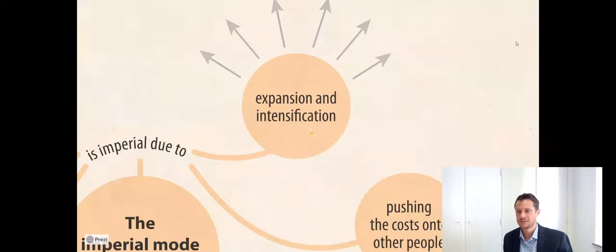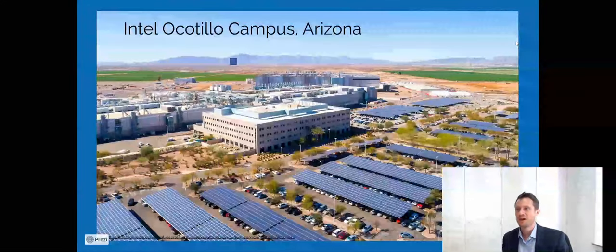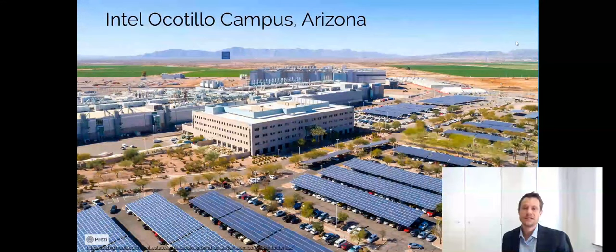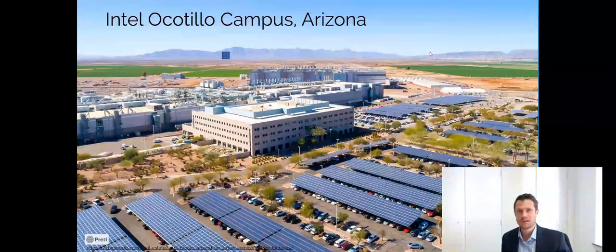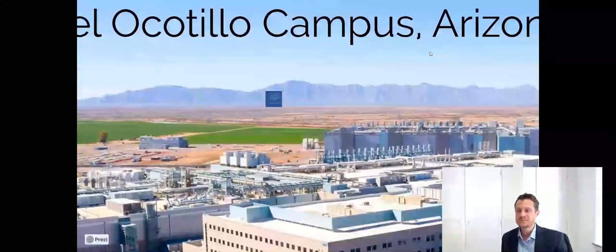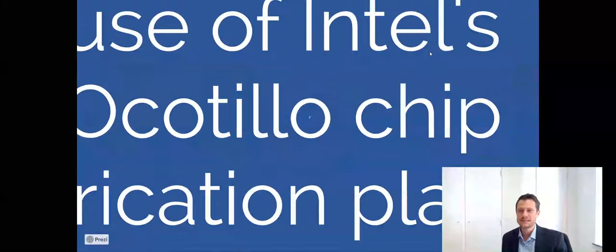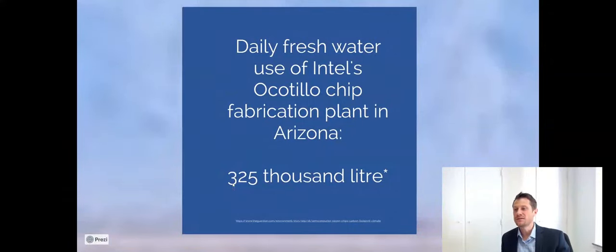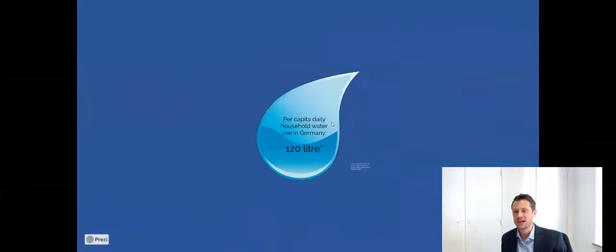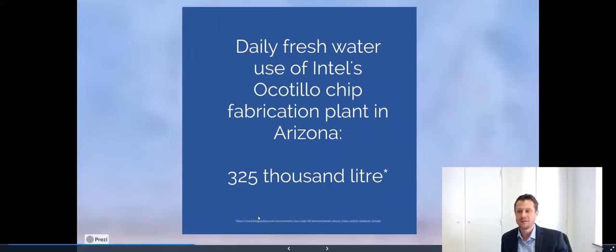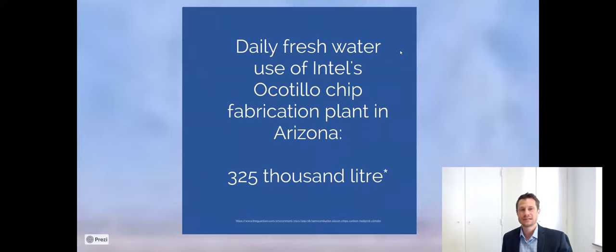Now I would like to highlight the example of the Intel Ocotillo campus, which is a manufacturing plant for Intel microchips in Arizona. As you can see from the pictures, Arizona is a very dry area, and this is about water use. In Germany, for example, the daily household water use per person is 120 liters. What does this manufacturing plant use? They use 325,000 liters. And if you remember, this graph is actually in the correct ratio. So this is the amount of water, this small little drop that we cannot even see anymore, is the amount of water that one family uses per day. And this big dark blue rectangle is the amount that this factory uses every day.